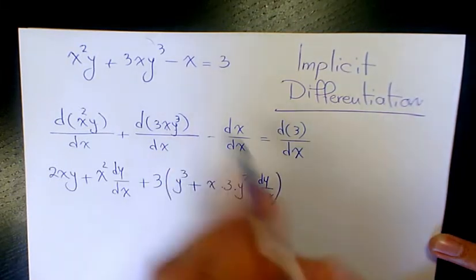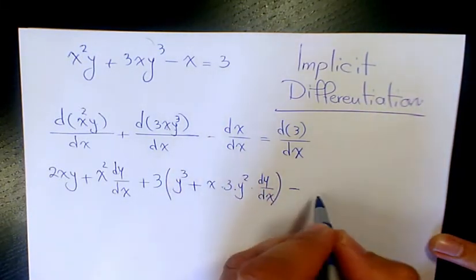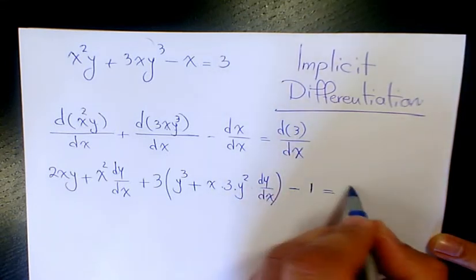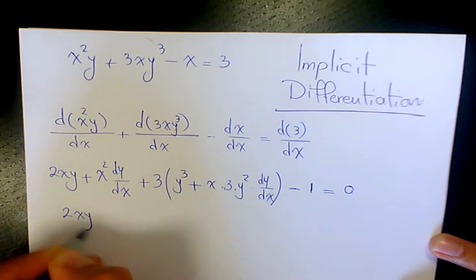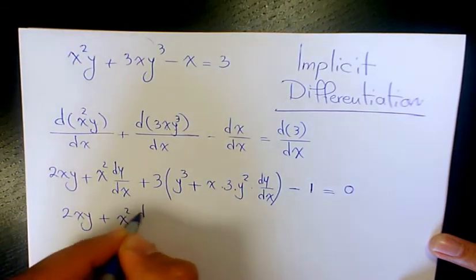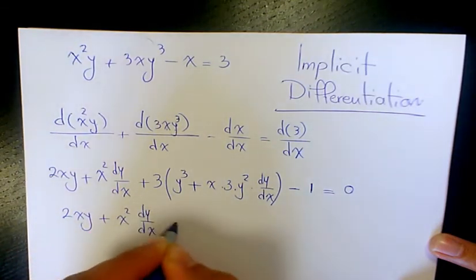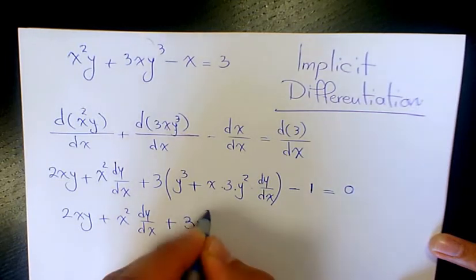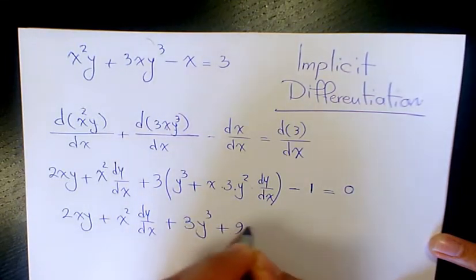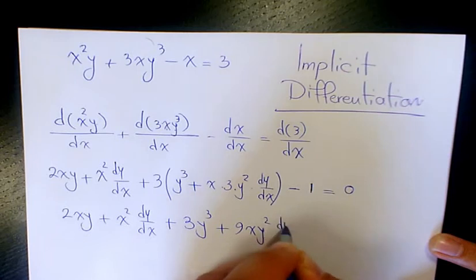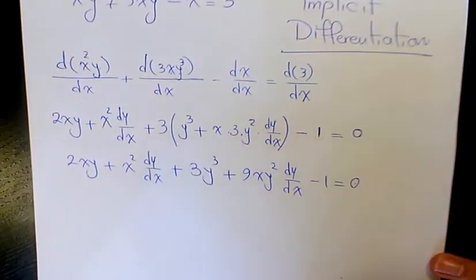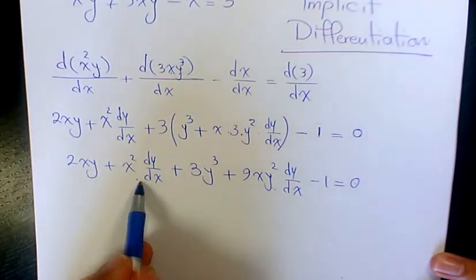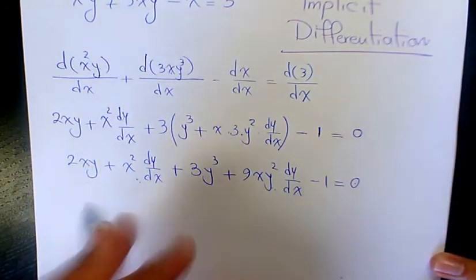Then dx over dx is 1, and the derivative of 3 with respect to x is 0. So it's going to be 2xy plus x squared dy over dx plus 3y cubed plus 9xy squared dy over dx minus 1 equals 0. We keep two terms on the left hand side and move the other two to the right hand side.